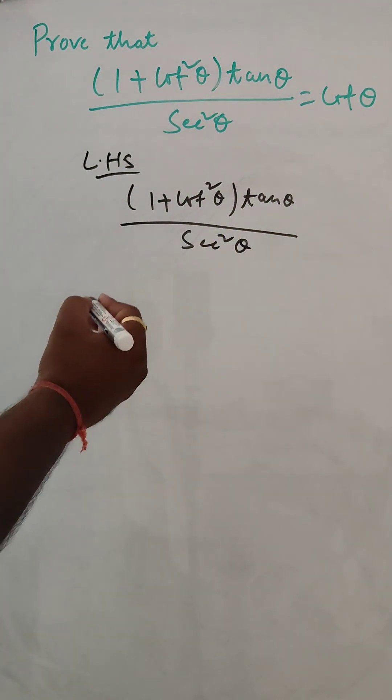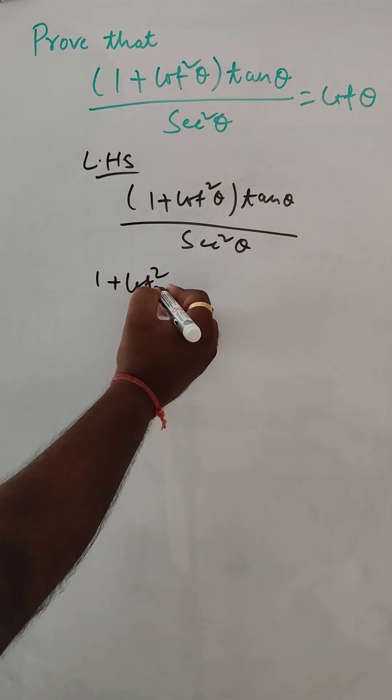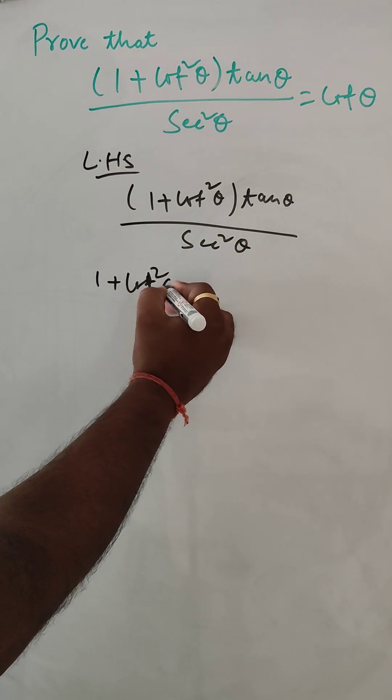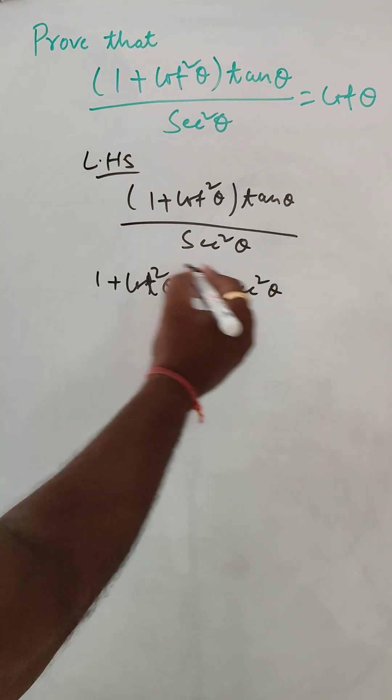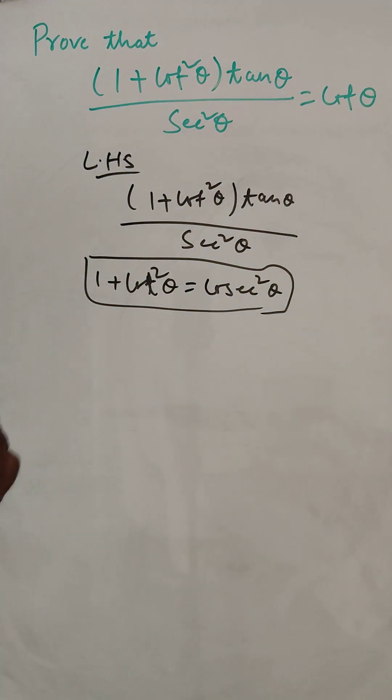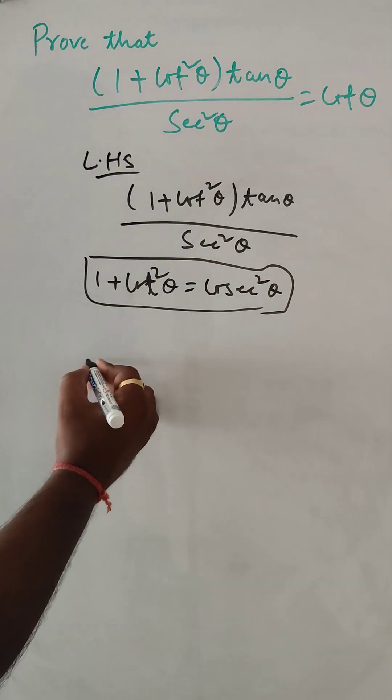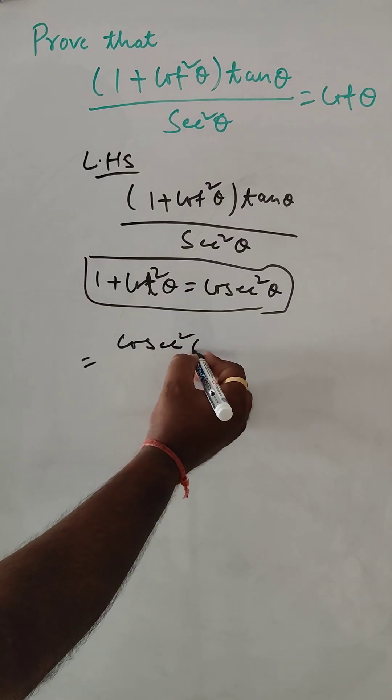So 1 plus cot²θ is what? 1 + cot²θ = cosec²θ. This is one of the formulas. So here we can put cosec²θ.